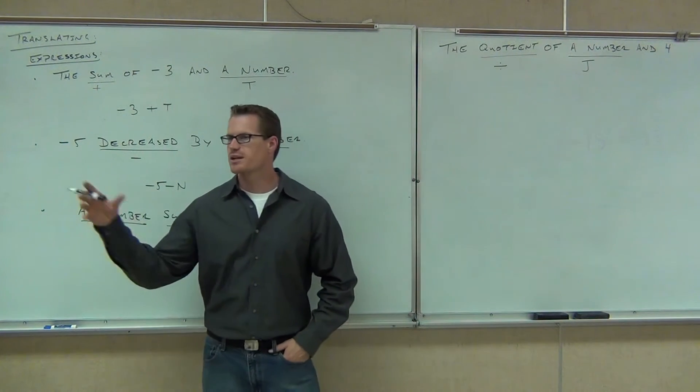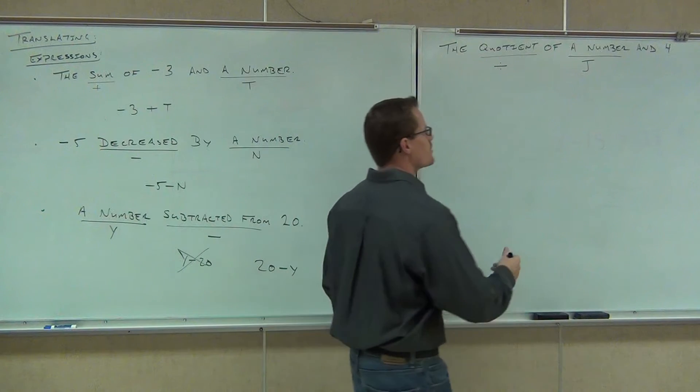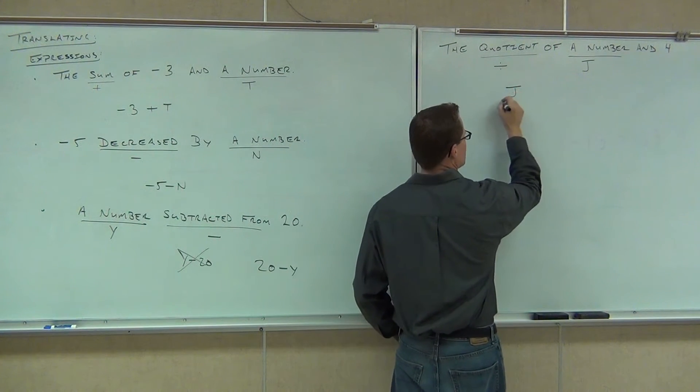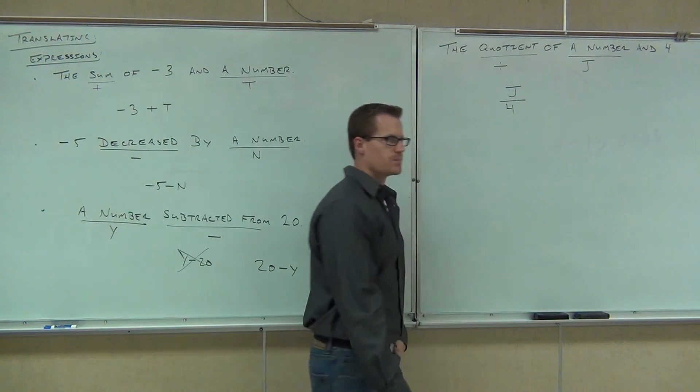So the quotient of a number and four, this is in order. It's just like a sum is in order. So if we have a quotient of a number and four, we're going to have J over four. That's the way we're writing division. Give me a fraction.